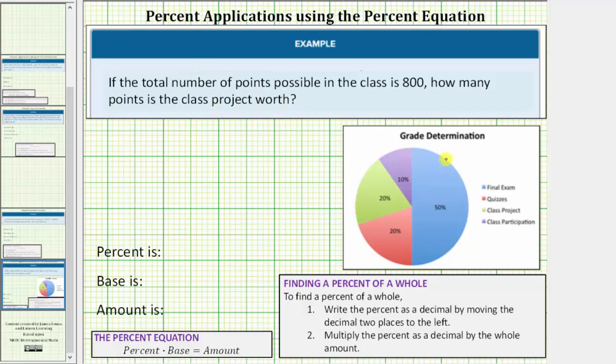Looking at the pie chart, notice how the class project is green, and therefore the class project is 20% of the grade, and therefore the class project is worth 20% of 800 points.